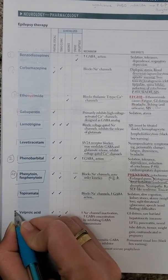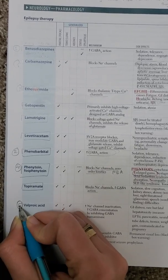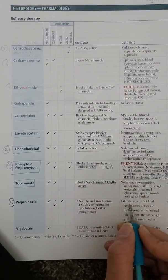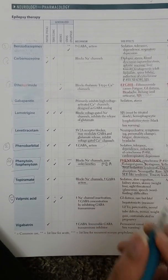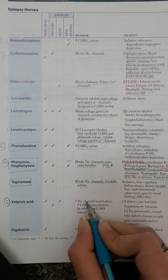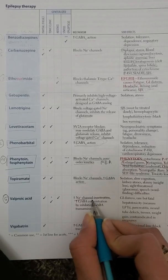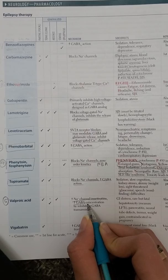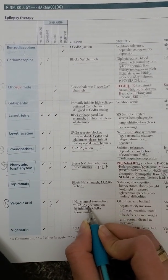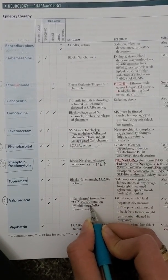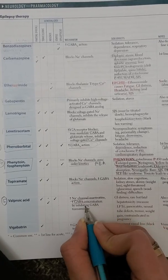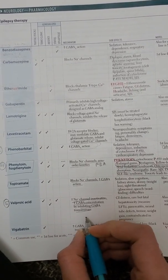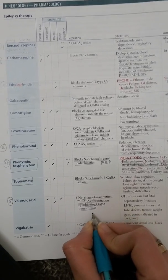Valproic acid is our sixth drug. Its mechanism is similar to phenytoin but has three different mechanisms: it blocks the sodium channel, inhibits GABA transaminase — thereby increasing GABA concentration — and blocks T-type calcium channels.